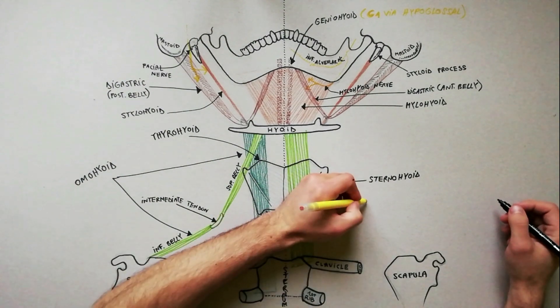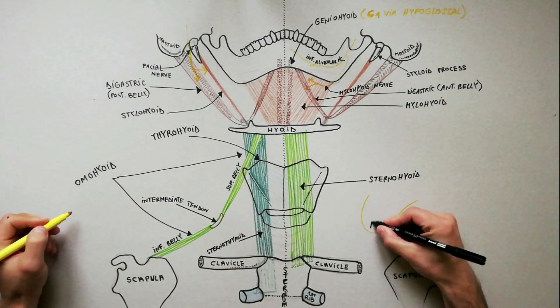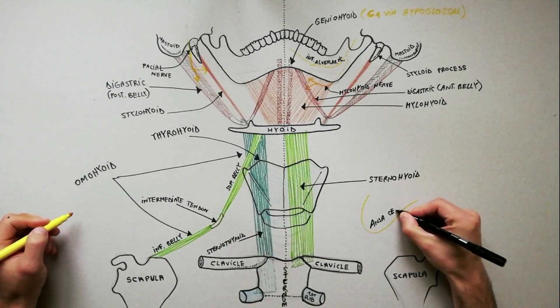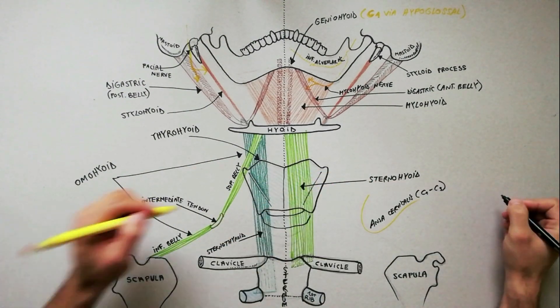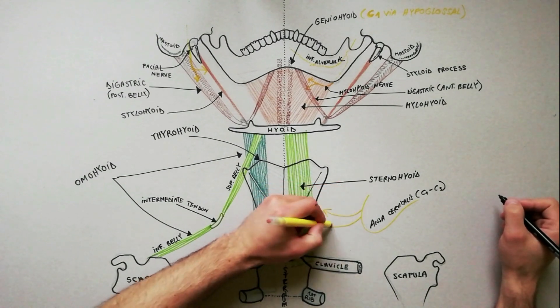All four paired infrahyoid muscles are innervated by the ansa cervicalis.